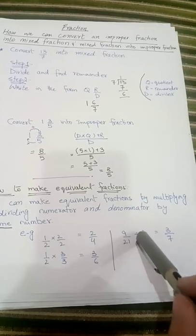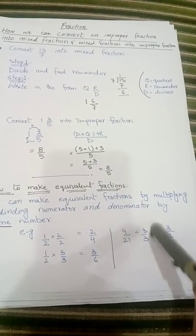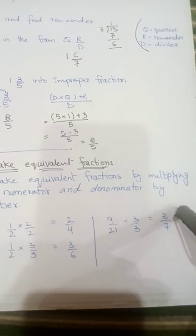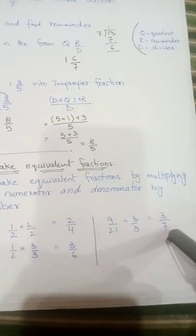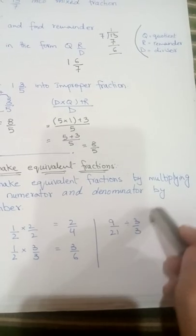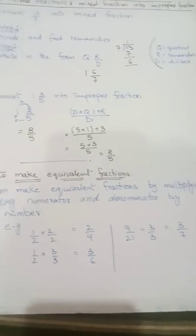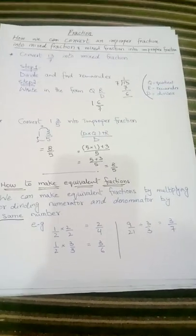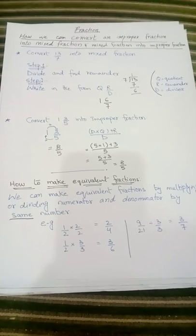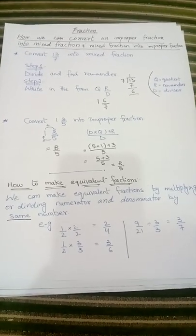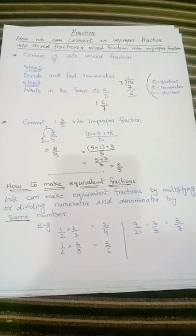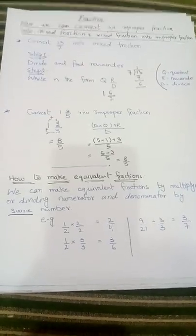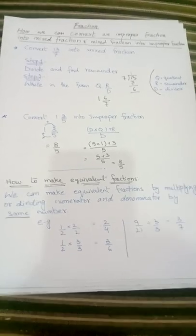In the same way, if we divide the numerator and denominator by the same number we get an equivalent fraction. For example, 9 divided by 3 gives 3, and 21 divided by 3 gives 7. So 9 upon 21 and 3 upon 7 are equivalent fractions because they both share the same portion of the whole. Next time inshallah we will study more about fractions — till then, Allah Hafiz.